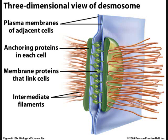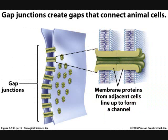Desmosomes hold cells together in sheets. Different proteins help to anchor the desmosomes and then they connect with the other cell. The protein keratin forms intermediate filaments that anchor the desmosomes into the cytoplasm of the cell. The adhesion points where the two cells come together are made of the two proteins, desmoglein and desmocollin. The cells come together by homophilic binding.